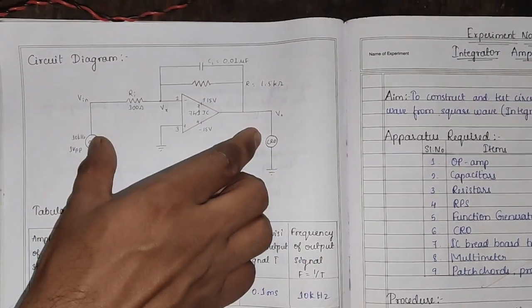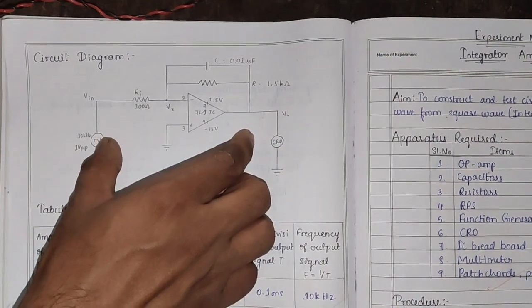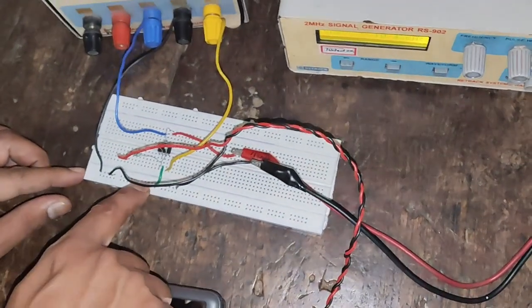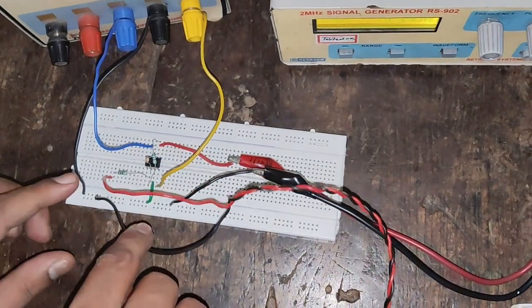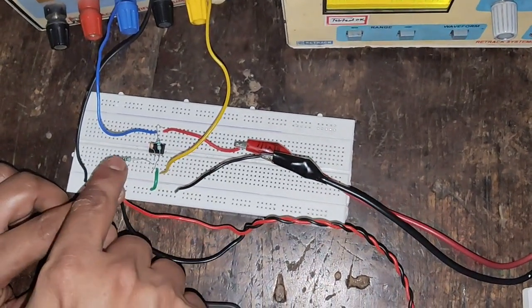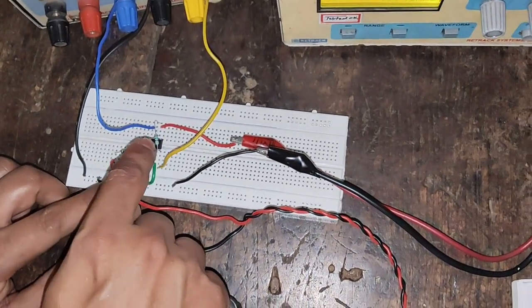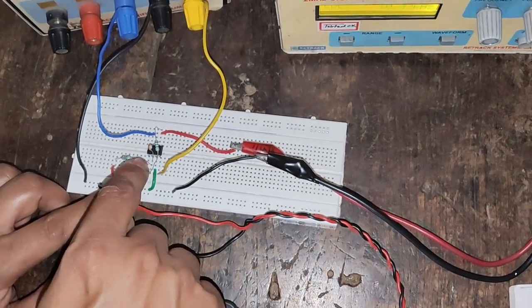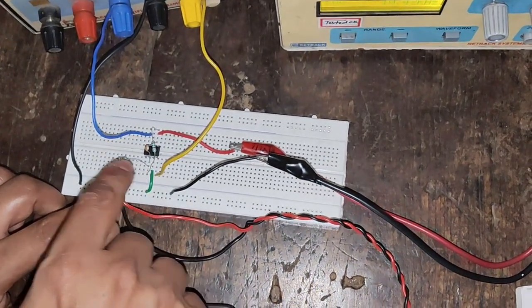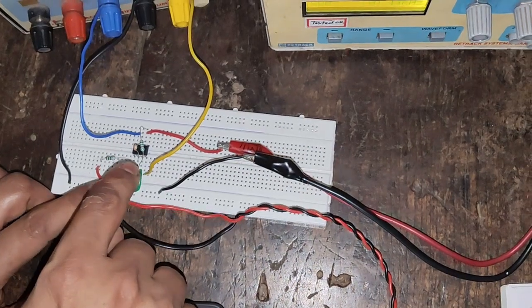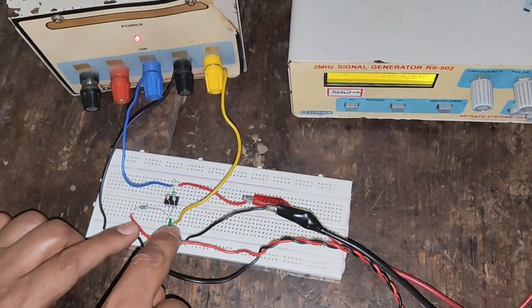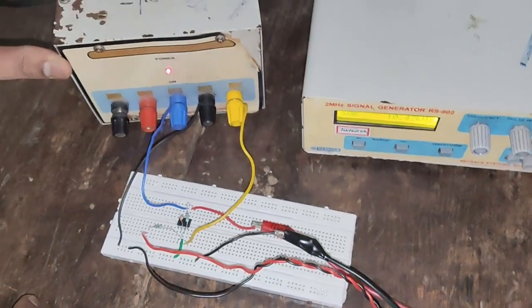The same circuit we have connected on the breadboard. Here we can observe that in the breadboard we have connected the circuit. At the input we have connected resistor R and at the feedback we have connected one capacitor and resistor. Since we are using Op Amp, Op Amp needs plus 12V power supply and minus 12V power supply. Hence we are using Op Amp power supply.